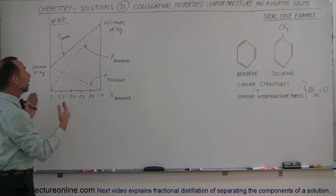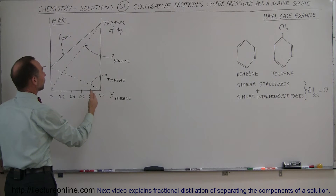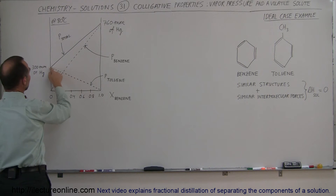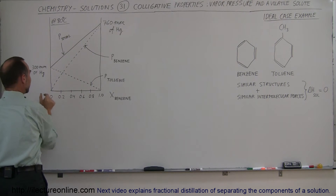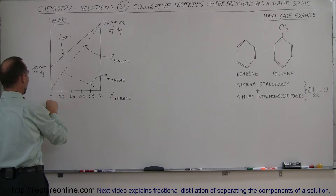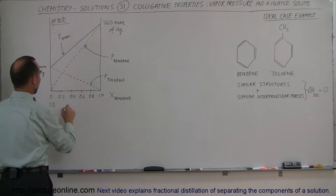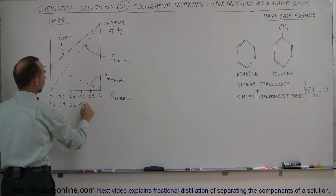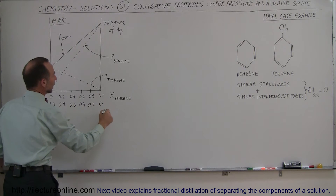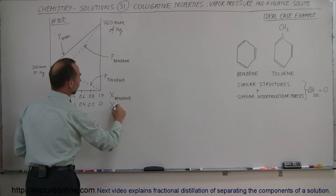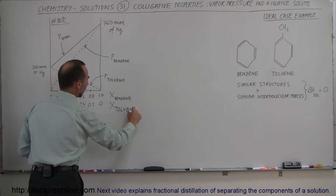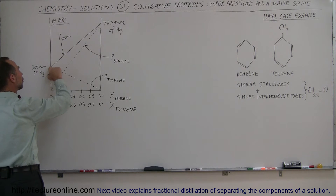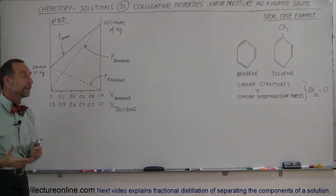If 100% of the solution is toluene — meaning 0% is benzene — then the molar fraction of toluene goes from 0 to 1.0, passing through 0.8, 0.6, 0.4, and 0.2. You can see that if the whole solution is toluene, the total vapor pressure is caused entirely by the vapor pressure of toluene.